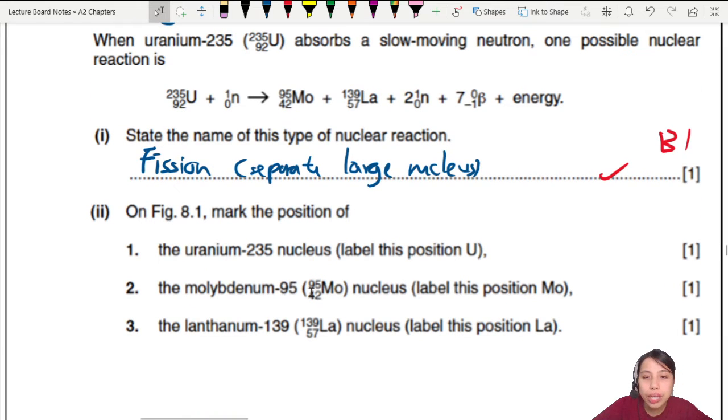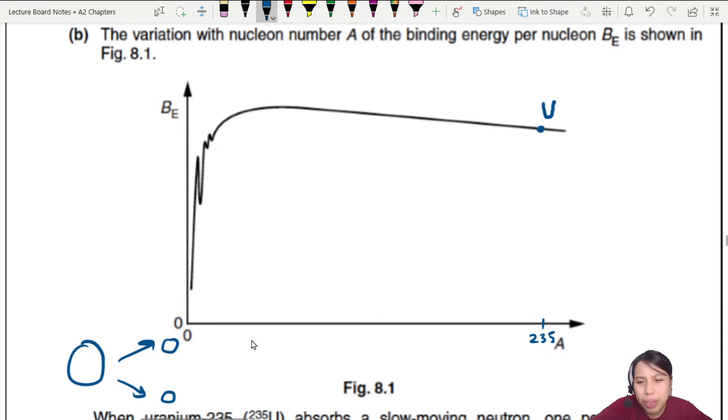What else do we need to mark? Molybdenum-95 and lanthanum-139. So this is at 95 and this is 139. Where would I put them? If this is 200, 100 should be a little bit less, maybe here. So one of it is 95, maybe right here - this is molybdenum, Mo, at 95. There's also lanthanum at 139, so probably a little bit more. If this is 200...